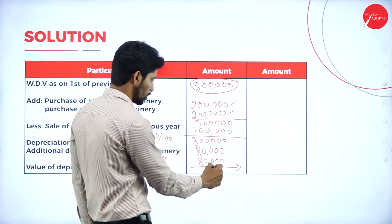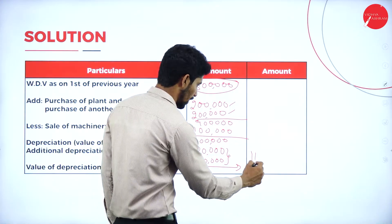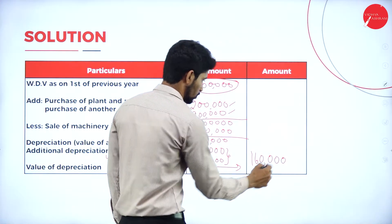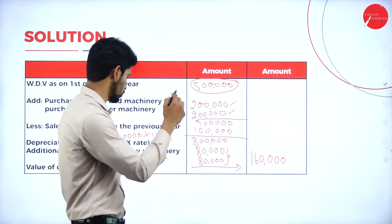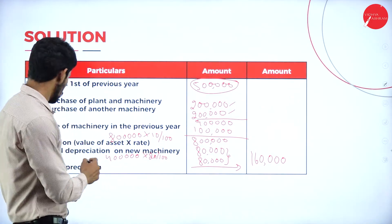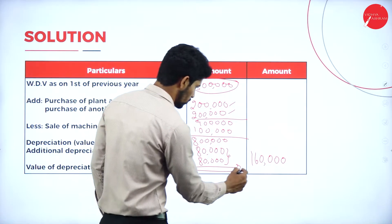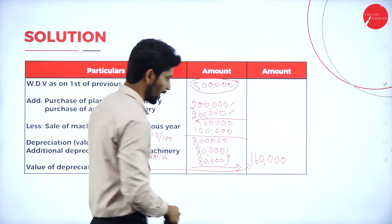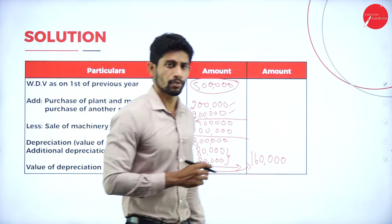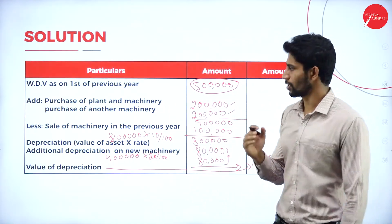So what is the total depreciation? Rs. 80,000 plus Rs. 80,000 equals Rs. 1 lakh 60,000. So the value of depreciation is Rs. 1 lakh 60,000. This is how we calculate the value of depreciation.